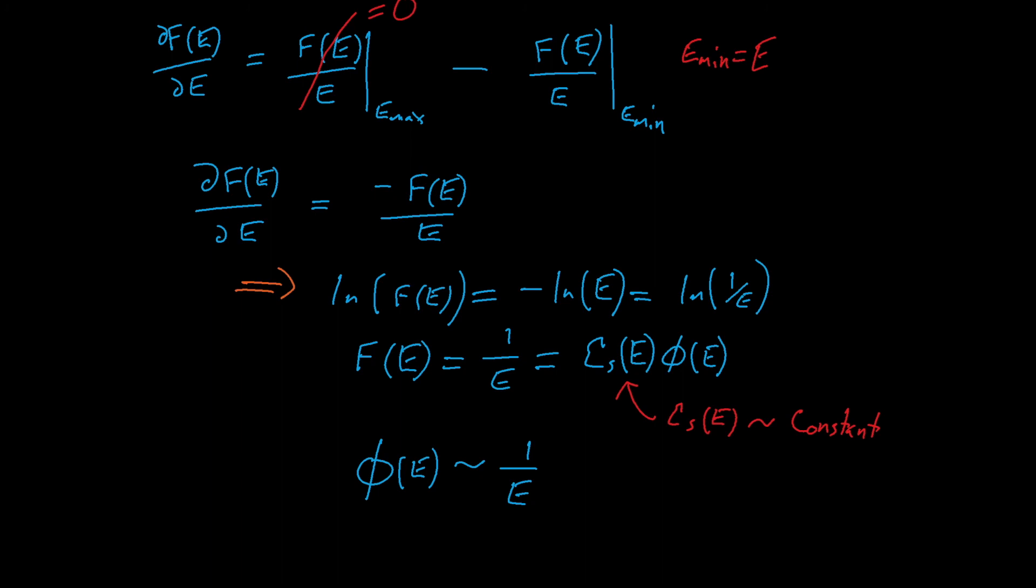We have all just survived a crash course into how the flux varies as a function of energy in a typical light water reactor. Next time we'll discuss how many scatters are necessary for a neutron to slow down, and then we'll begin discussing how likely it is for neutrons to be absorbed by resonances in the fuel while the neutrons are slowing down.